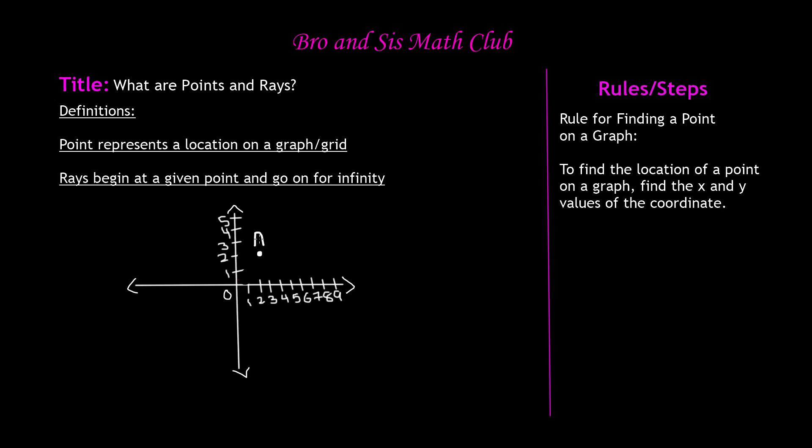My first point is going to be over here, and I'm going to call this point A. My next point is going to be up here, and I'm going to call this point B. Now, how will I find the location of point A and point B? If we take a look at our rules and steps — rule for finding a point on a graph — to find the location of a point on a graph, find the x and y values of the coordinate.